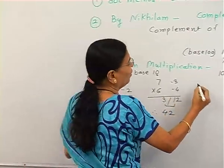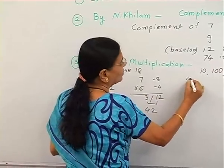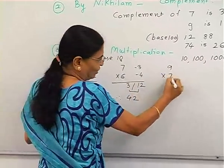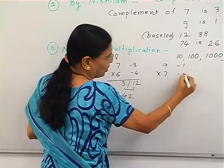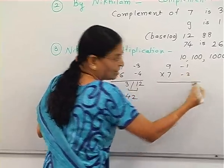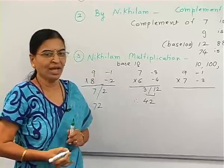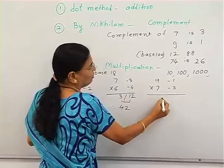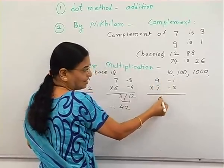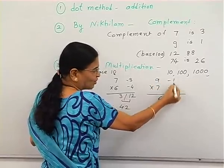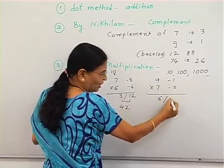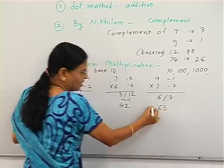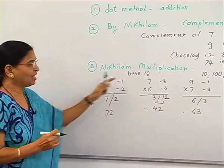One more example: 9 into 7. The complements are minus 1 and minus 3. Then 7 minus 1 equals 6 (or 9 minus 3 is also 6), and 3 into 1 is 3, so the answer is 63.